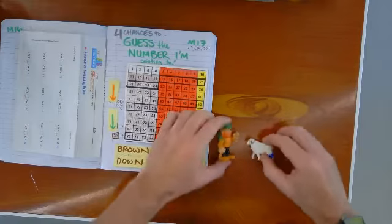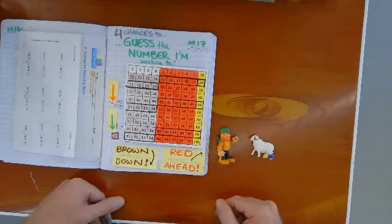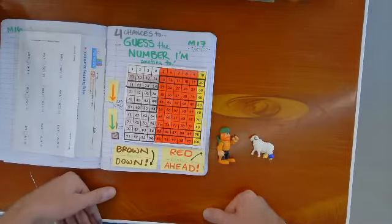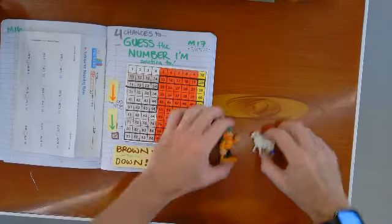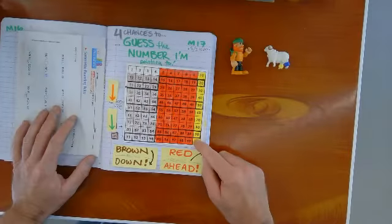So these two are going to get in a friendly game of Guess the Number I'm Pointing To. We colored all of our multiples of 10 yellow.